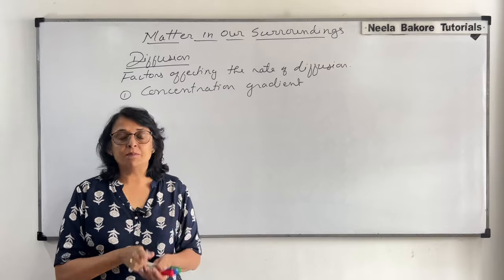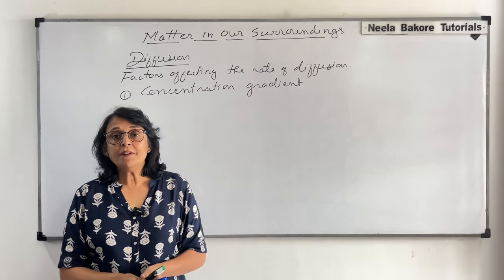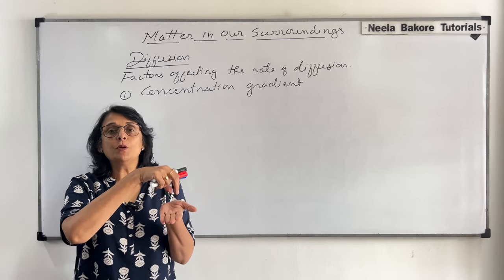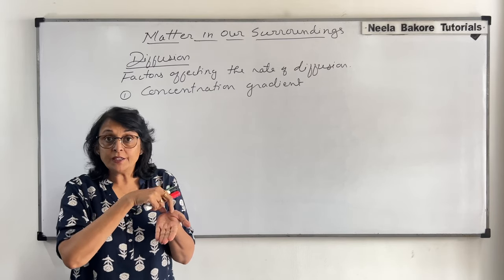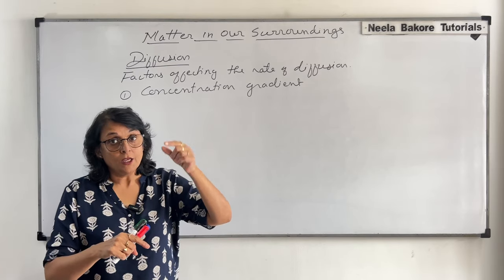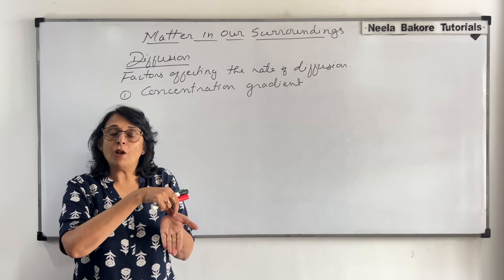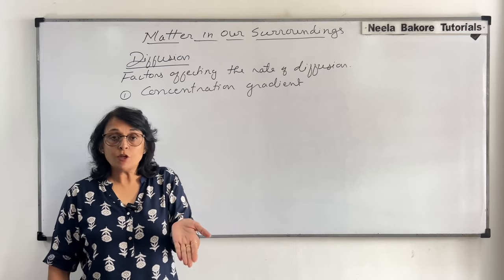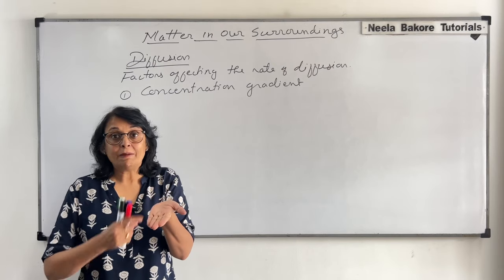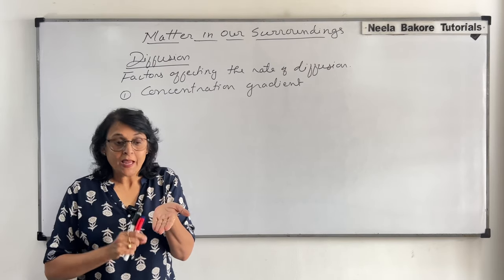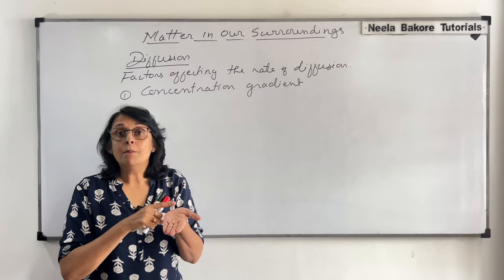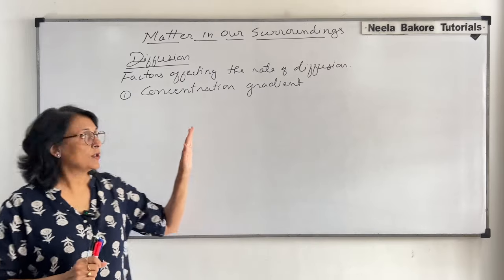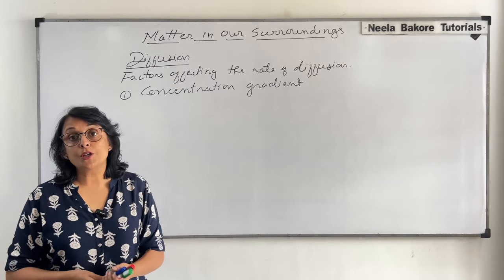To understand this, we can take a very simple example. Whenever we talk about a ramp, which is like a slope, and suppose we put the ball at the top portion. Here the difference is in the height. So if the slope is steep, we put the ball here and leave it — it starts rolling and it is going to roll very fast. Now suppose this ramp becomes less steep, that means the angle changes, and you keep the ball here. It will still roll, but it will roll at a little slower speed. Same is the situation when we are talking about the concentration difference.